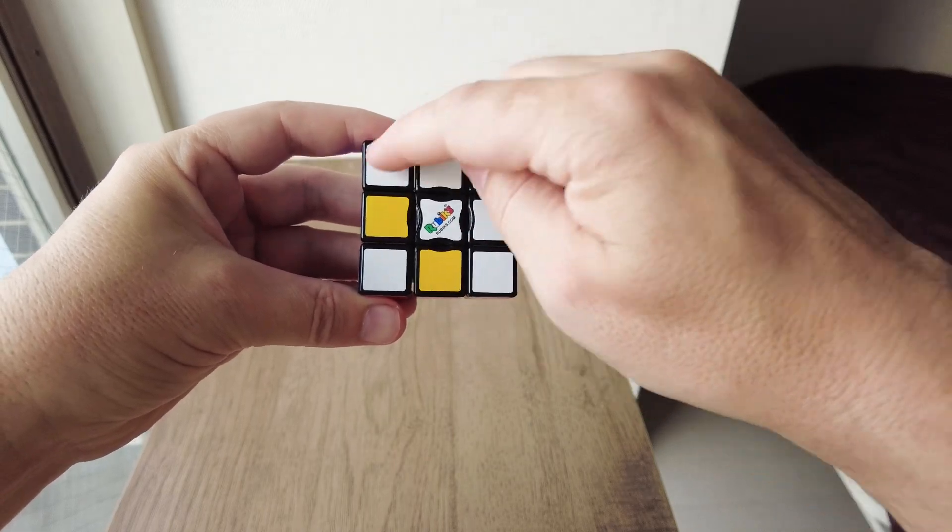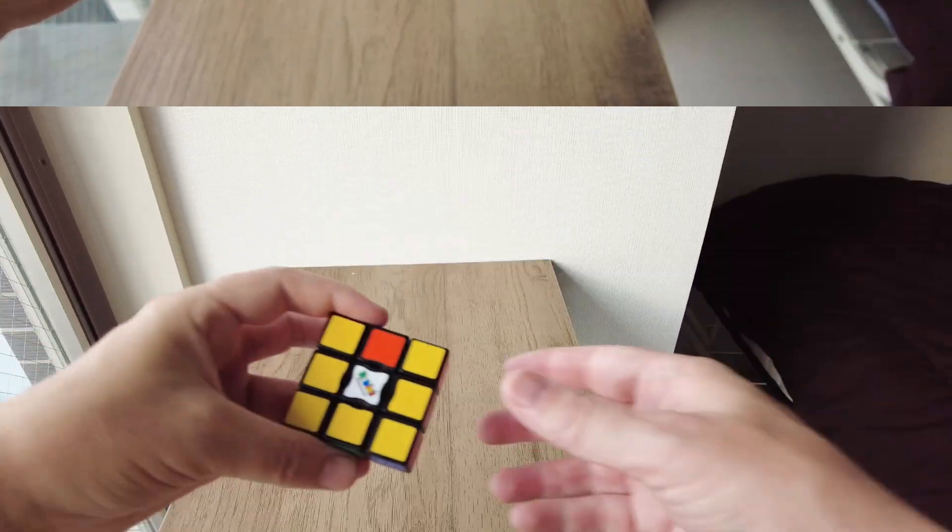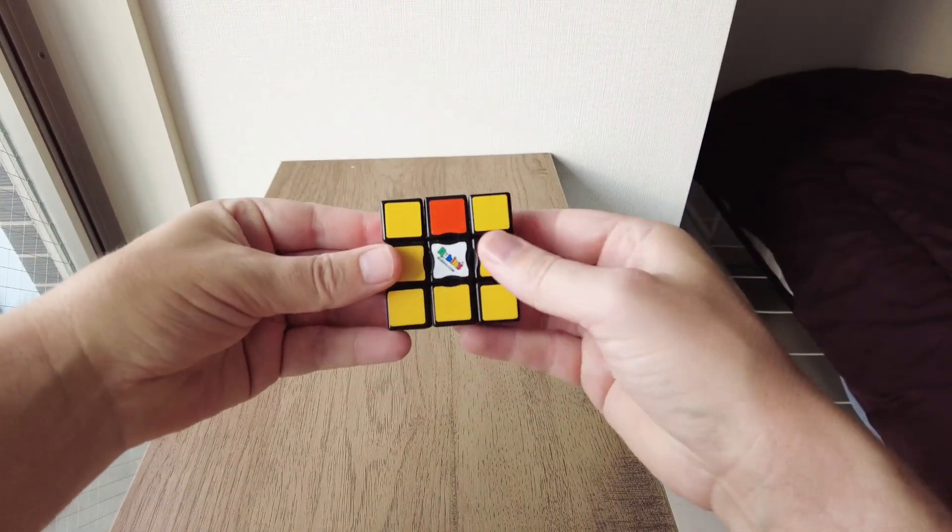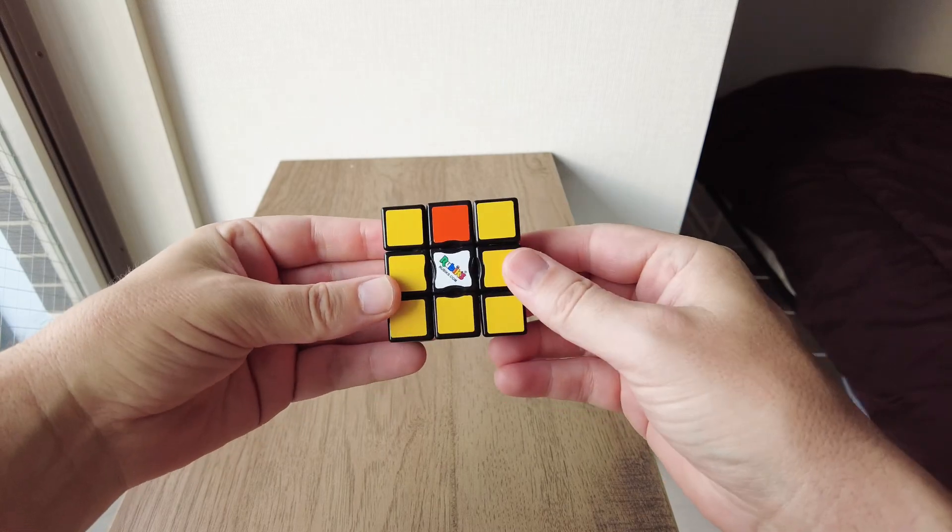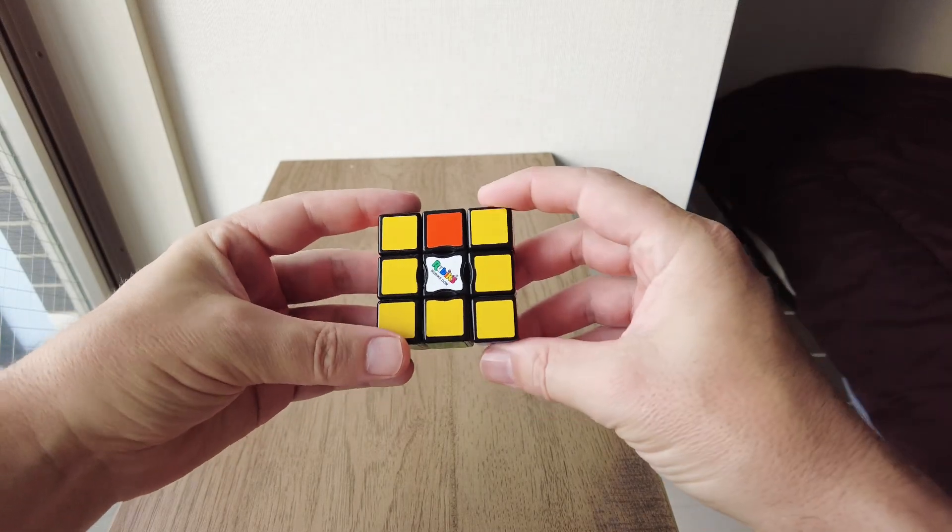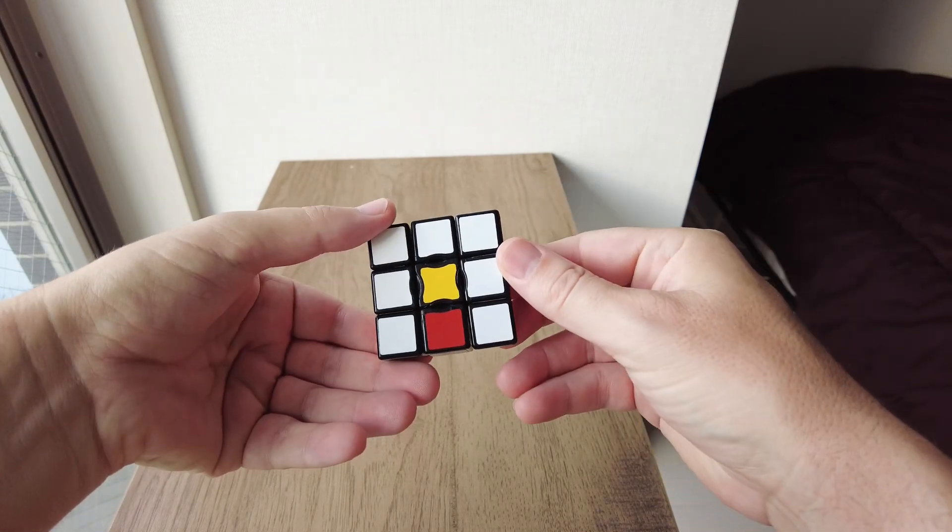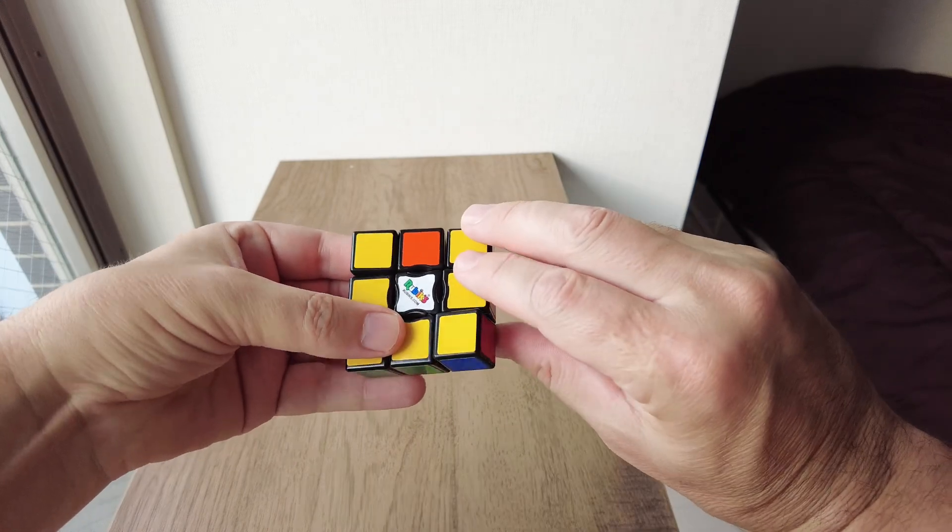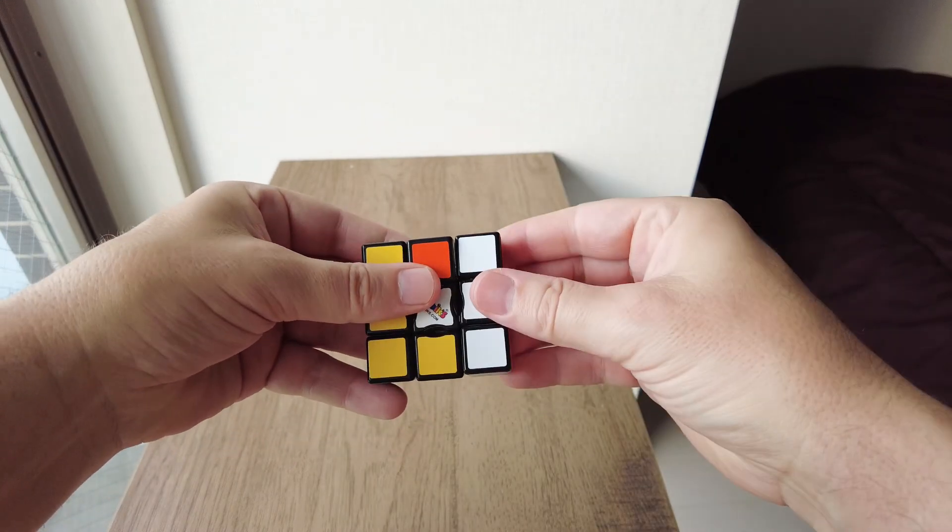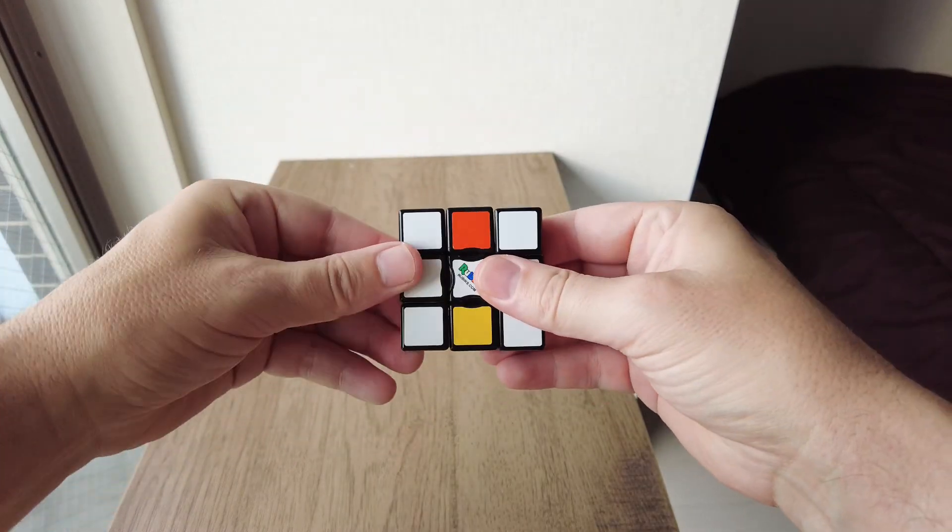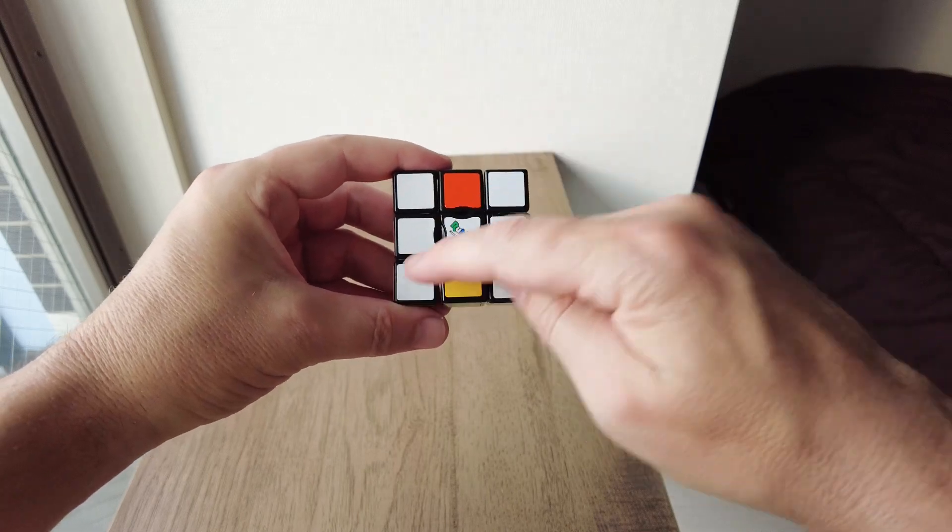You've got other white pieces as well, but we're focusing on this. In some cases, it might be just the middle is white, and you have no corners that are white. Well, to fix that, you just turn this 180 degrees, and this side 180 degrees. And there, you've got your white cross.